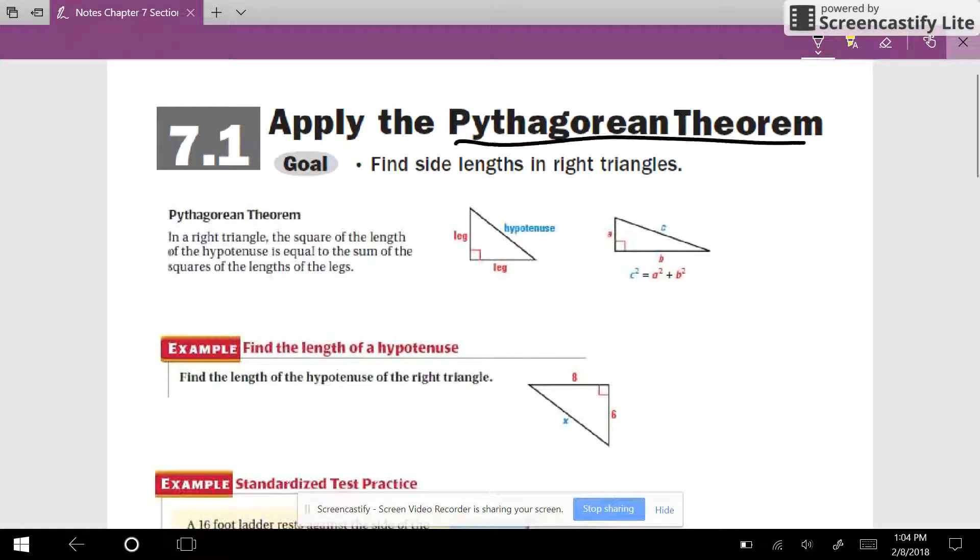All right, so in 7.1 we're going to talk about the Pythagorean Theorem. You can see it here. Oftentimes we write it the other way around and write it as a squared plus b squared equals c squared.